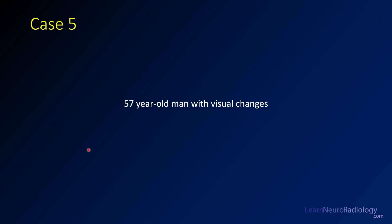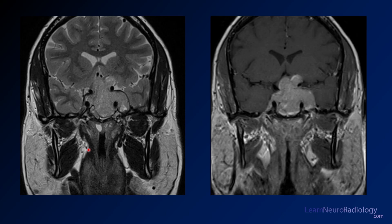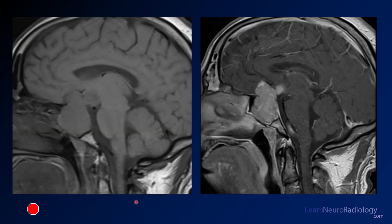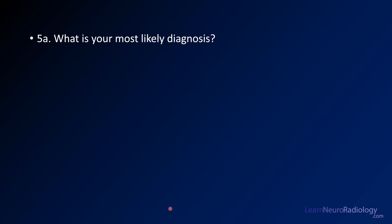Welcome back everyone as we cruise through these brain tumor board review cases for the spring of 2022. Case number five: a 57-year-old man with visual changes. On his imaging here you can take a look at why he might be having visual changes — a coronal T2 and a coronal post-contrast. Take a look at what you might think the abnormality is. Your first question is: what's your most likely diagnosis?